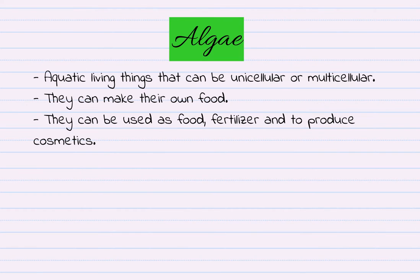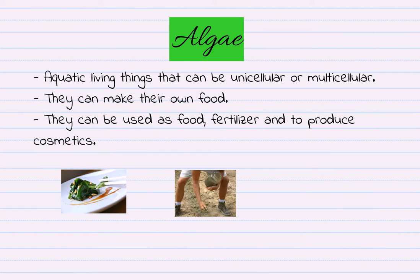Let's start with algae. They are aquatic living things that can be unicellular or multicellular. They can make their own food, and they can be used as food, fertilizer, and to produce cosmetics.